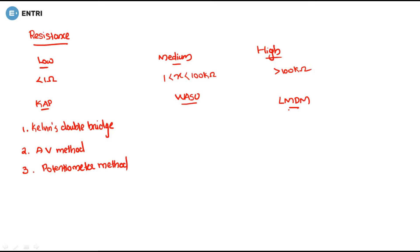To summarize: low resistance is below 1 ohm — use KAP. Between 1 ohm and 100 kilo ohm is medium resistance — use the ammeter-voltmeter method. Greater than 100 kilo ohm is high resistance — use LMD.